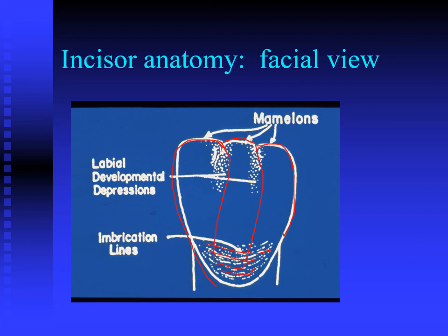Your understanding of labial developmental depressions and imbrication lines in your wax-ups will make the difference between a tooth that looks natural and reflects light correctly against the natural teeth adjacent to the restoration versus something that really stands out as inappropriate.